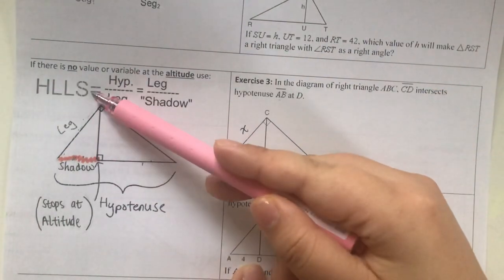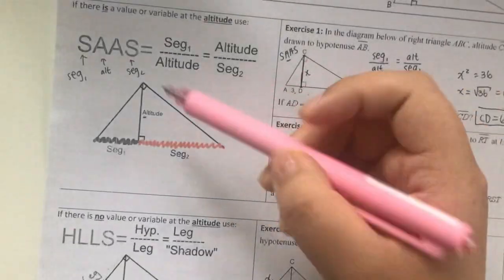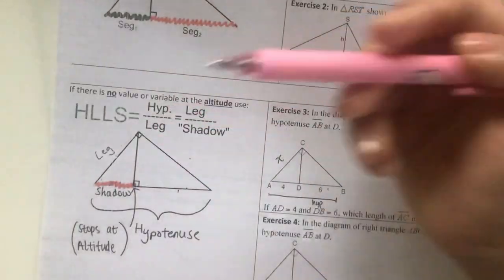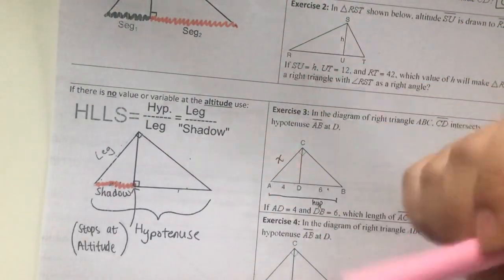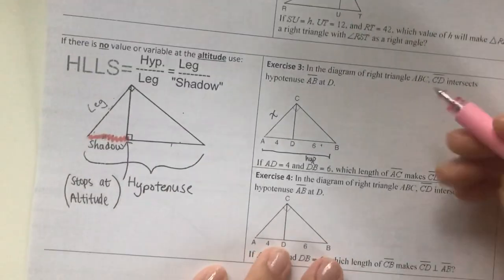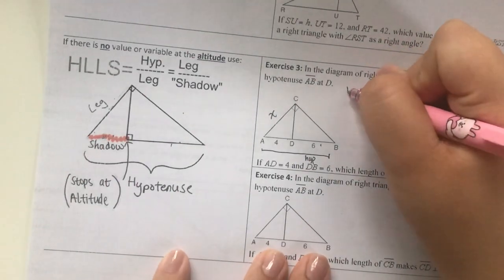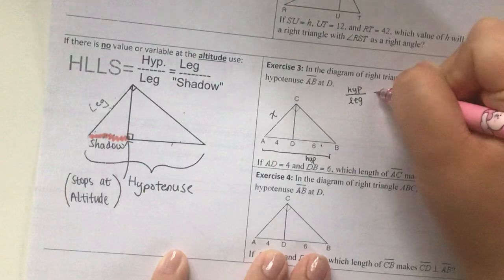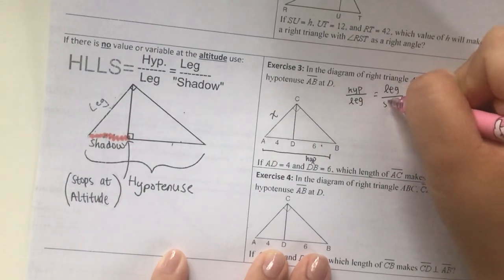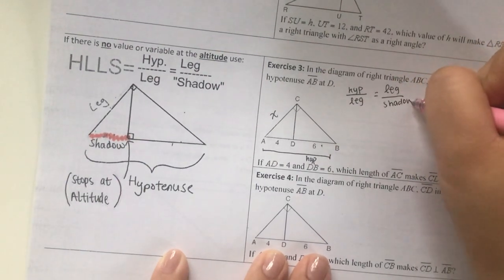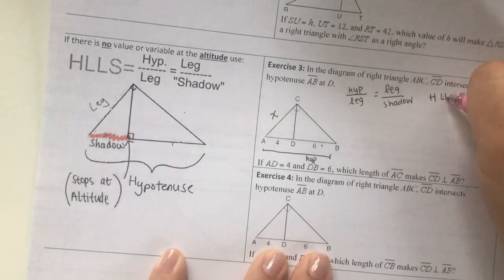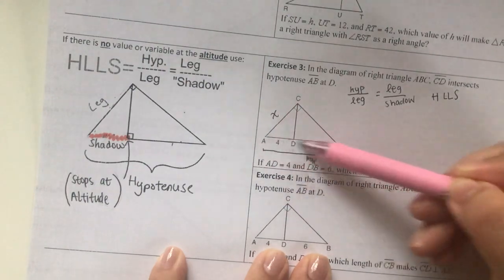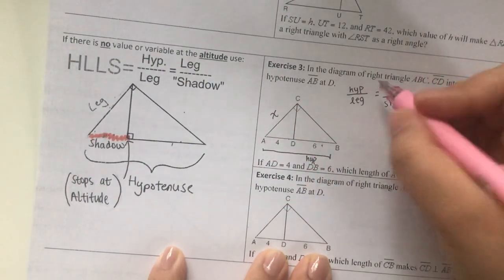It's not given to us and we're not looking for it, so I have to use HLLS because there's no A in HLLS. According to HLLS, it says hypotenuse over leg equals leg over shadow. H-L-L-S. Hypotenuse is AB, which is 4 plus 6 equals 10.